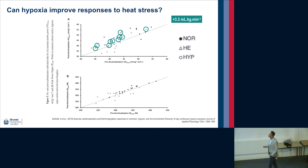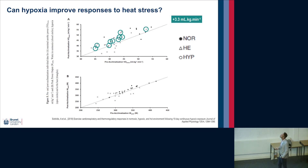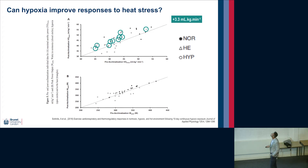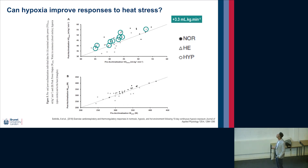To almost close the loop on combined exercise cross-adaptations, another really nice study from Igor's lab examined whether hypoxic training — or residing in hypoxia — could improve responses to heat stress. When looking at maximal oxygen uptake, they found a significant and sizeable response within heat trials, suggesting this direction of cross-adaptation also warrants further investigation.